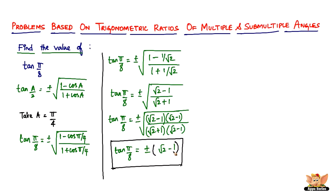So the value of tan(π/8) is plus or minus (√2 minus 1). That ends this problem. Let's quickly solve another one — we've solved tan(π/8), so let's solve a different angle now.